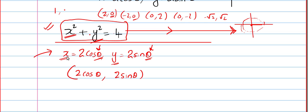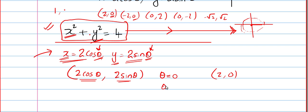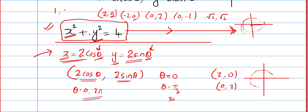In parametric form, things are easier because it is already in the form of a coordinate — this is the x value, this is the y value, and it depends on a third variable. By putting values for theta — for example 0°, you get (2cos0, 2sin0) = (2, 0). If theta = 90°, you get (0, 2). Varying theta from 0 to 2π gives infinite points and again you get the same circle. That's the logic behind parametric form.